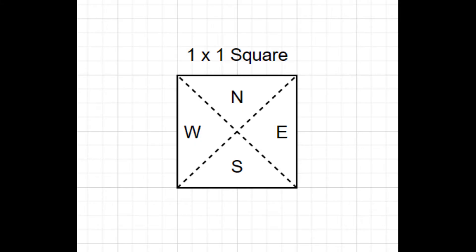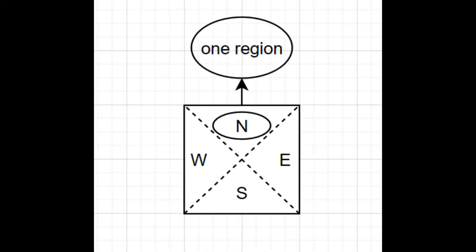To solve this question, we first divide each 1 times 1 square into 4 regions: north, east, west, and south. The intuition behind this problem is to treat slashes as boundaries that separate regions.